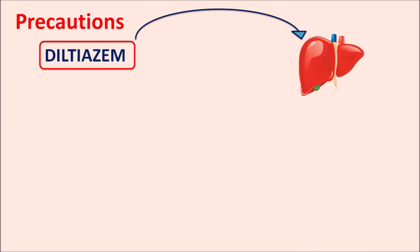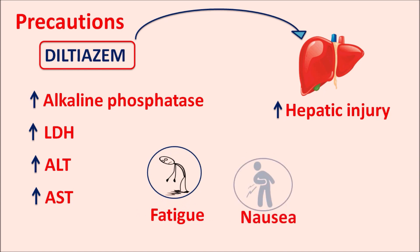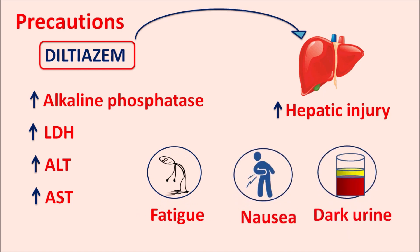Diltiazem can affect the liver and increase hepatic injury. Liver enzymes are elevated with longer-term use: serum alkaline phosphatase, lactate dehydrogenase (LDH), ALT (alanine transaminase), and AST (aspartate transaminase) are all increased, indicating hepatic injury. Symptoms include fatigue, nausea, abdominal pain, dark-colored urine, and elevated bilirubin resulting in jaundice — observed when the drug is used long-term at very high doses.